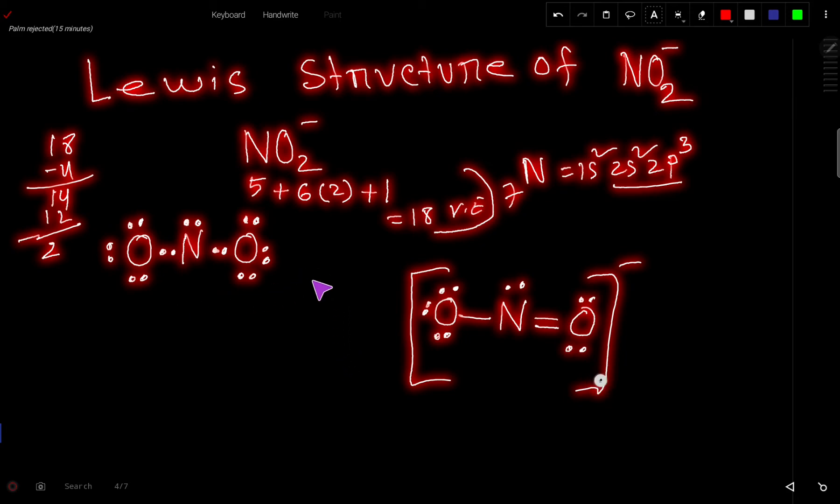We will move a lone pair to become a bond pair. We can move a lone pair from this oxygen or this oxygen. The 2 oxygens are equal. After moving, we get this structure.